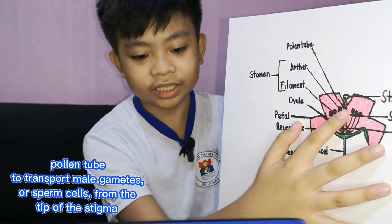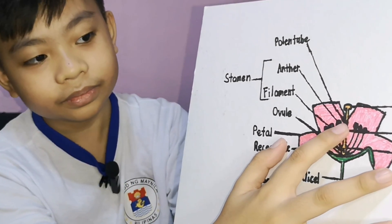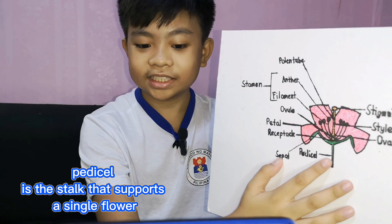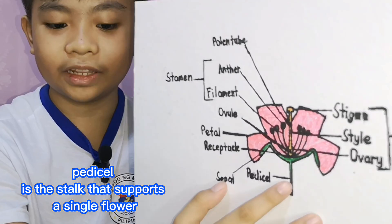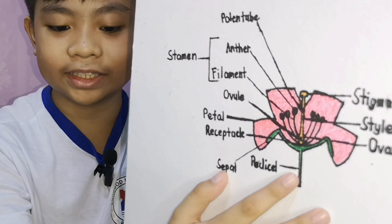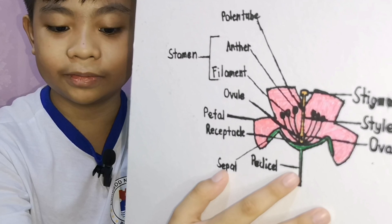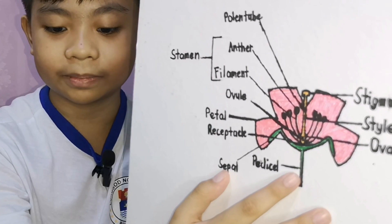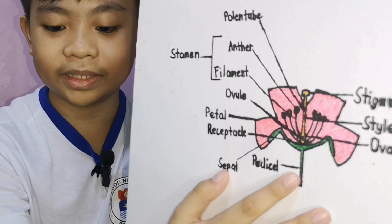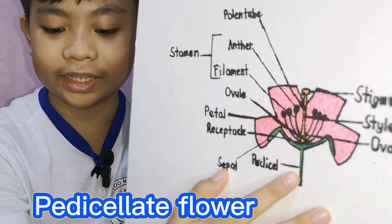The pollen tube transports sperm cells from the tip of the stigma to the ovary. A singular branch from the inflorescence is the pedicle. A flower with a pedicle is known as a pedicellate flower.